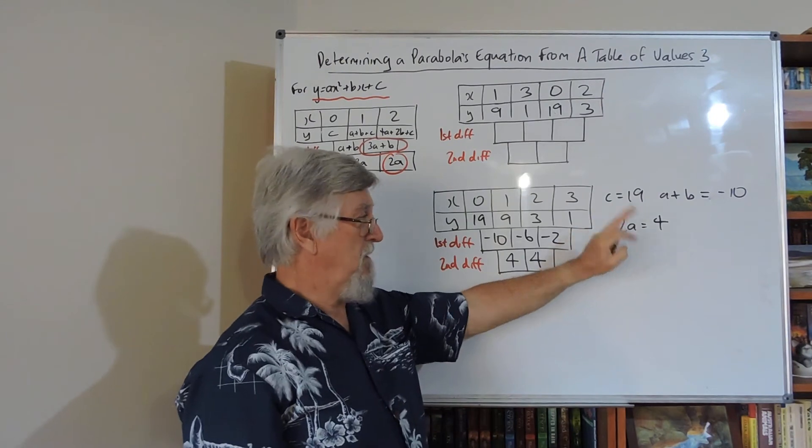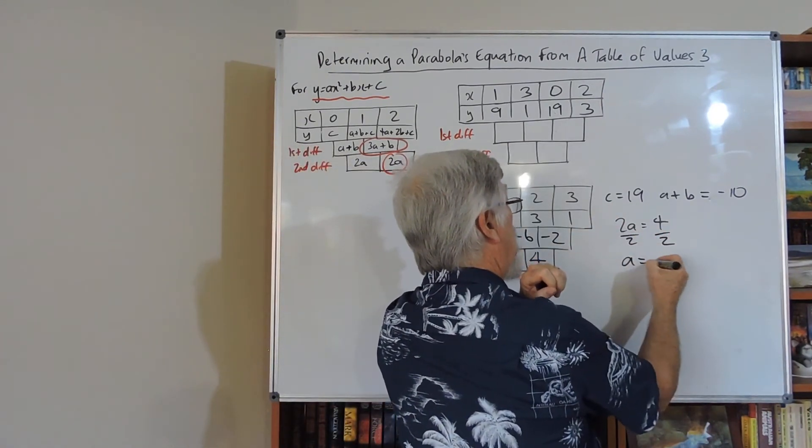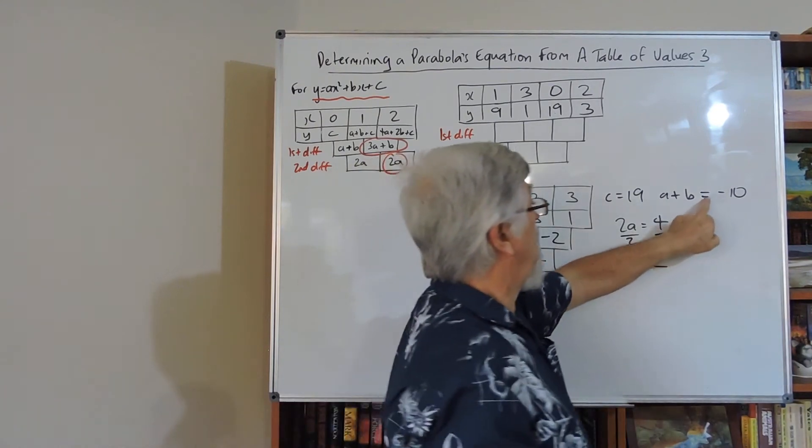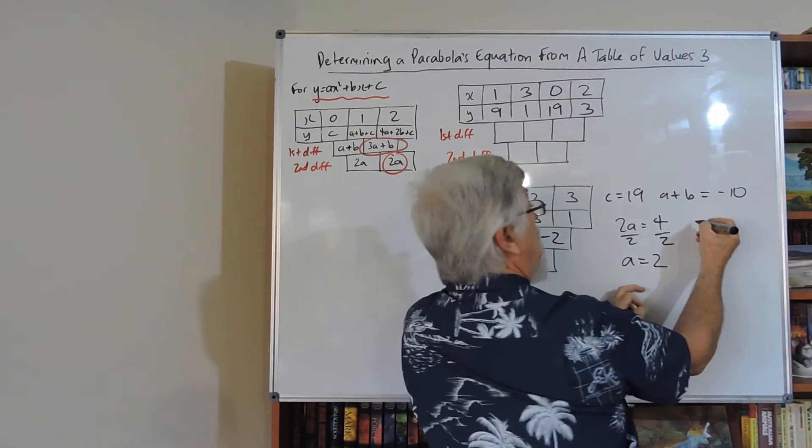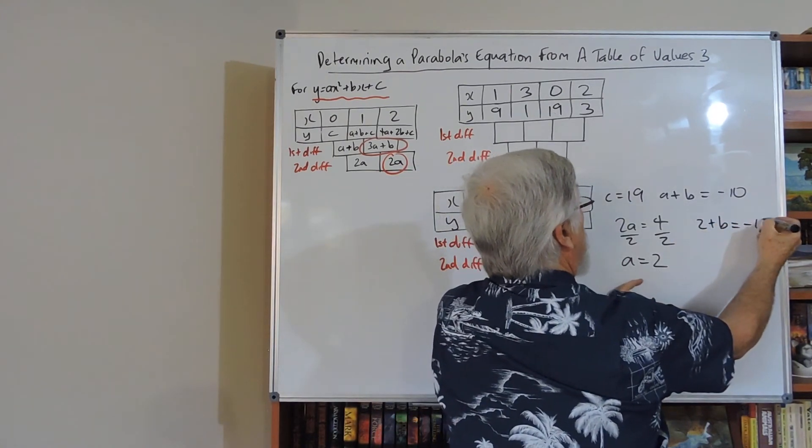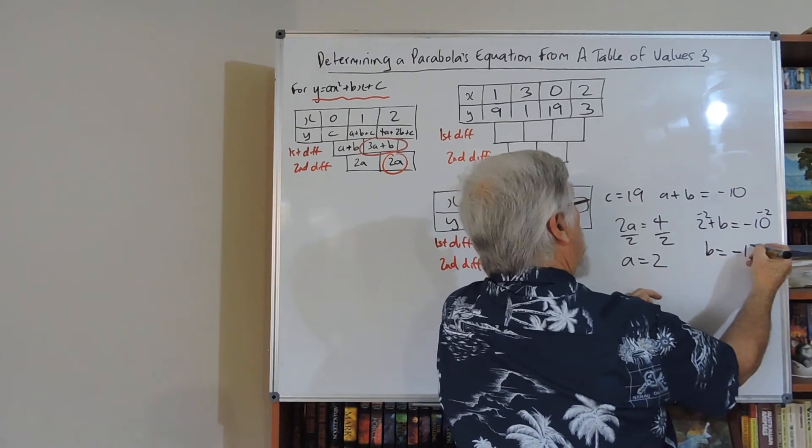This is the second most obvious. If I divide them both by 2, I've got A equals 2. Now I can go back over to this equation here. I can substitute or replace the A by the 2. 2 plus B equals minus 10. Take 2 from both sides, and I've got B equals minus 12.